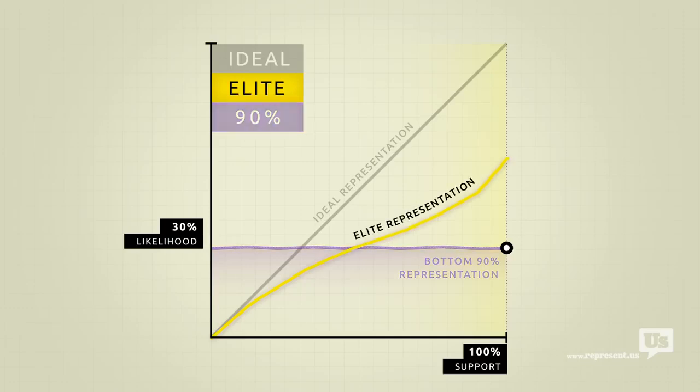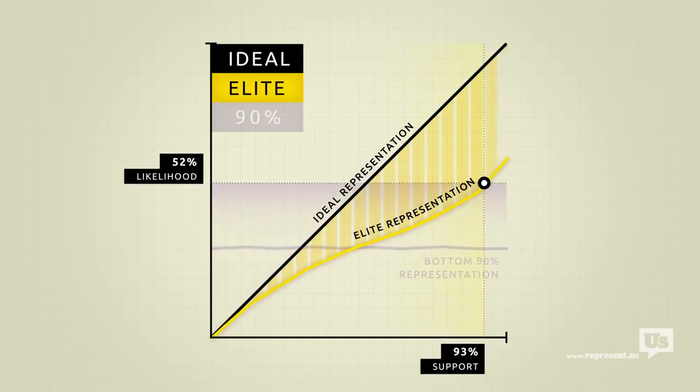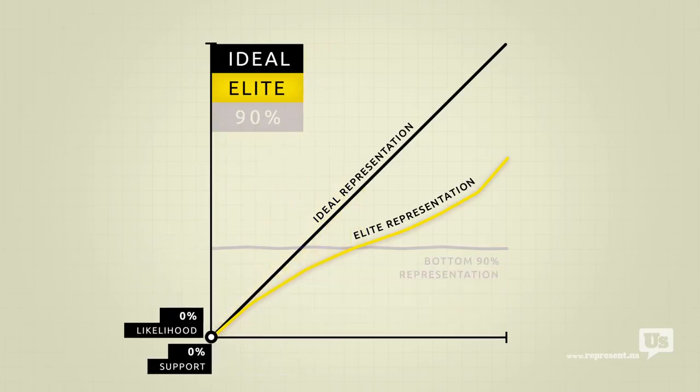Look at how much closer their line is to the ideal. When they want something the government is much more likely to do it. And when they don't, they have the power to completely block it from happening, no matter how much the rest of the country supports it. They get what they want and guess who ends up paying for it.